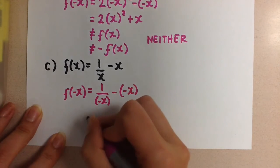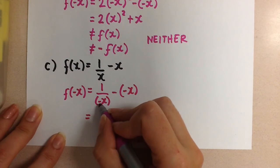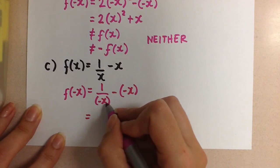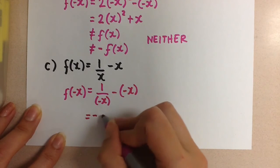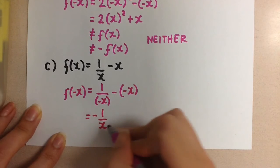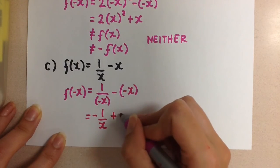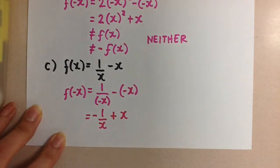This is what we have. Now we simplify. We can write this negative in the numerator or in the denominator or outside of the whole fraction. Like this. And then we get plus x here.